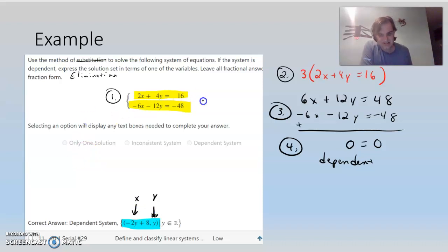So I can take either one of these equations, and I'm going to take the first one. 2X plus 4Y equals 16. And let's solve it for X.